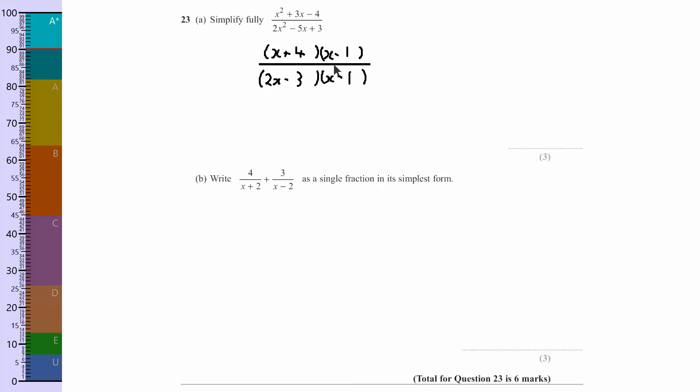Okay, so the next step is to cross off or divide top and bottom by x minus 1. So you end up with x plus 4 at the top. You don't need the bracket anymore. And then 2x minus 3 at the bottom. So your answer is x plus 4 over 2x minus 3. And some people just put lines through them. So I could do that as well. Put lines through them both to say that we're canceling them down.